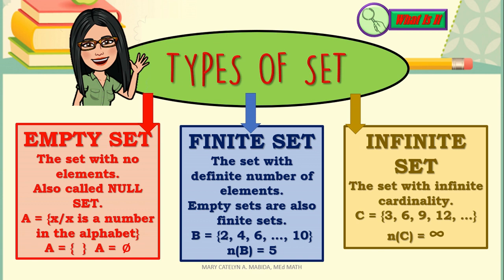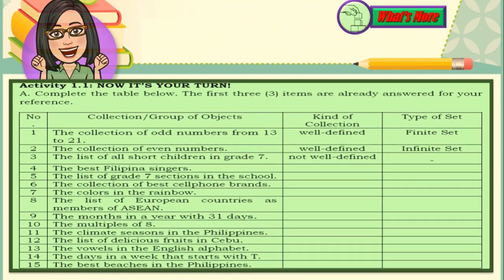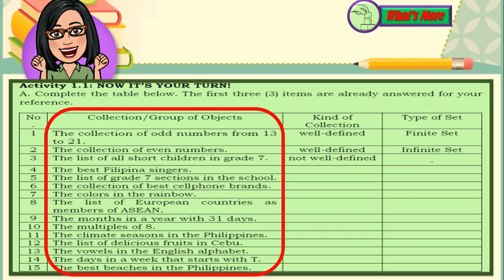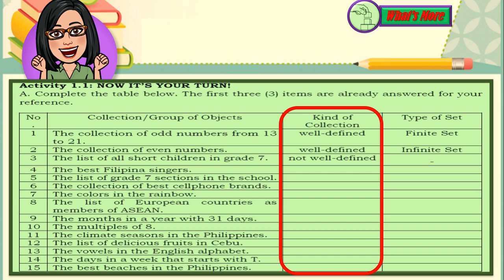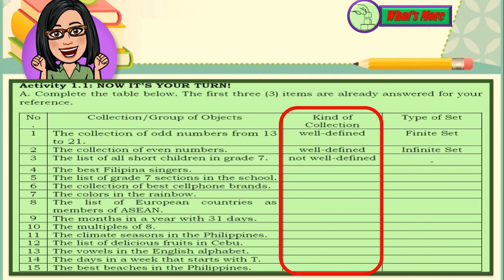You can pause and replay any part of the video at any given time. What's more — Activity 1, now it's your turn — has two parts. Let's talk about Card A first: complete the table below. The first three items are already answered for your reference. There are 15 collections or groups of objects. Identify if the collection is well-defined or not well-defined, and then identify the type of set. If the collection is not well-defined, it does not have a type as it is not a set.